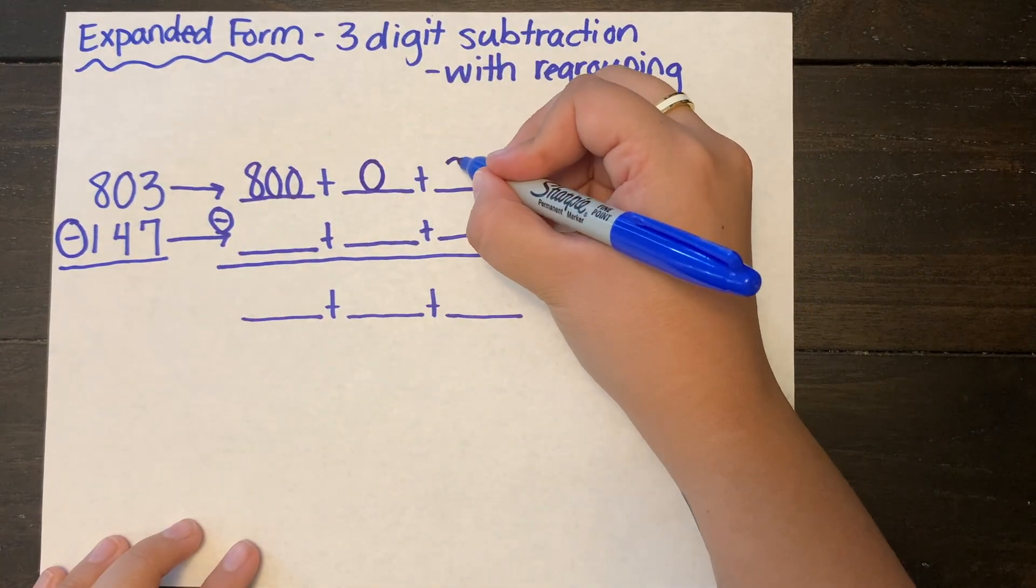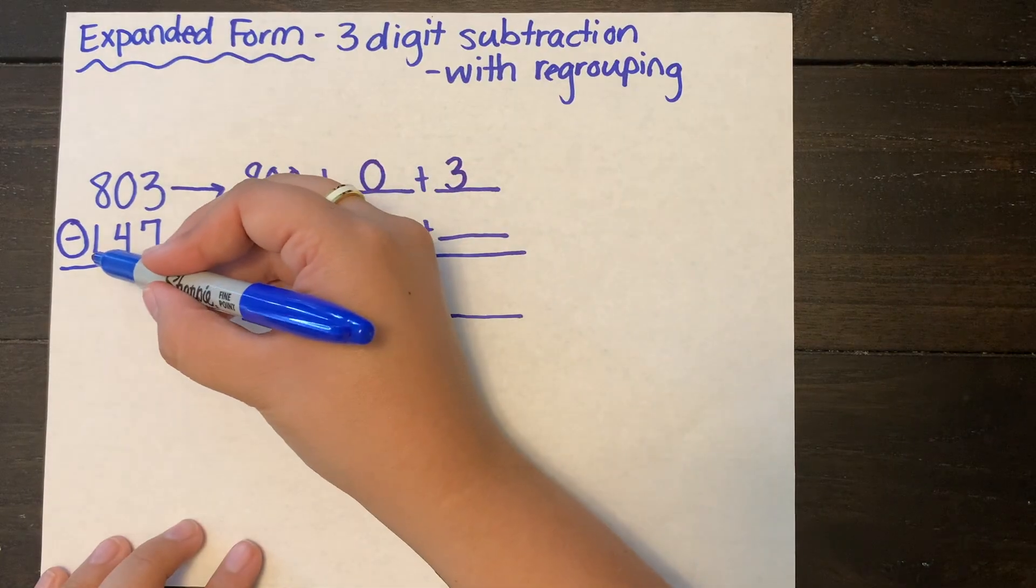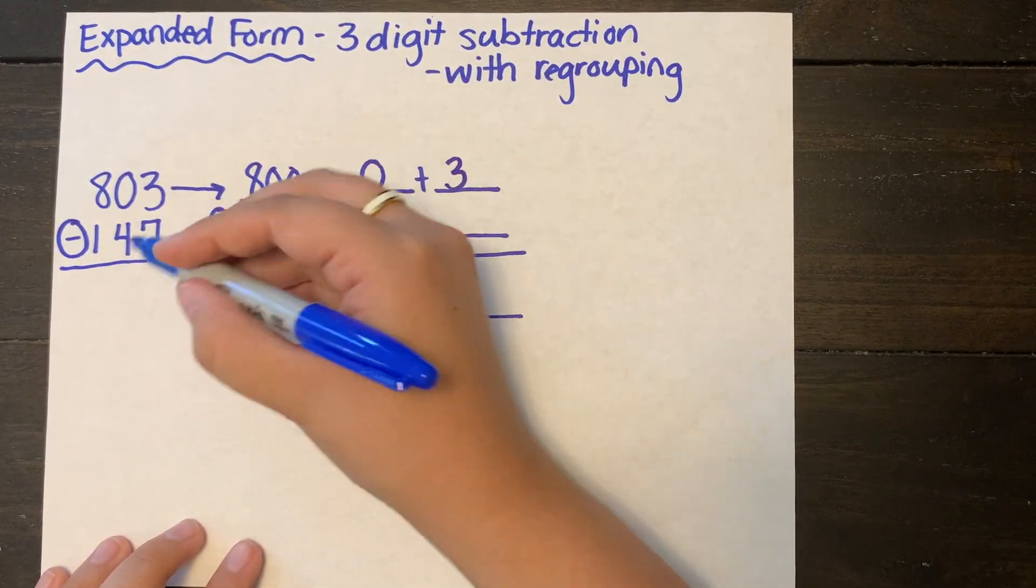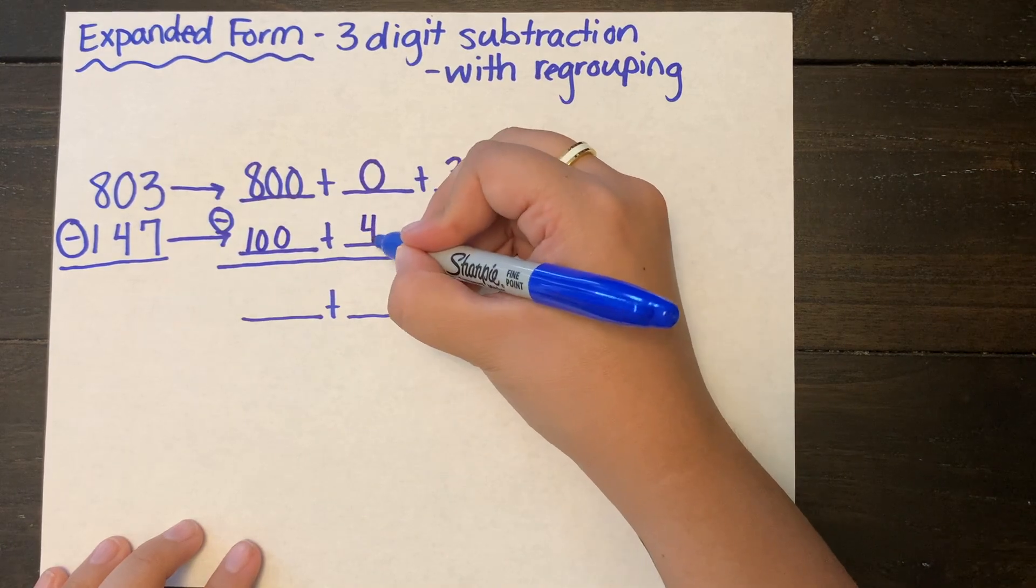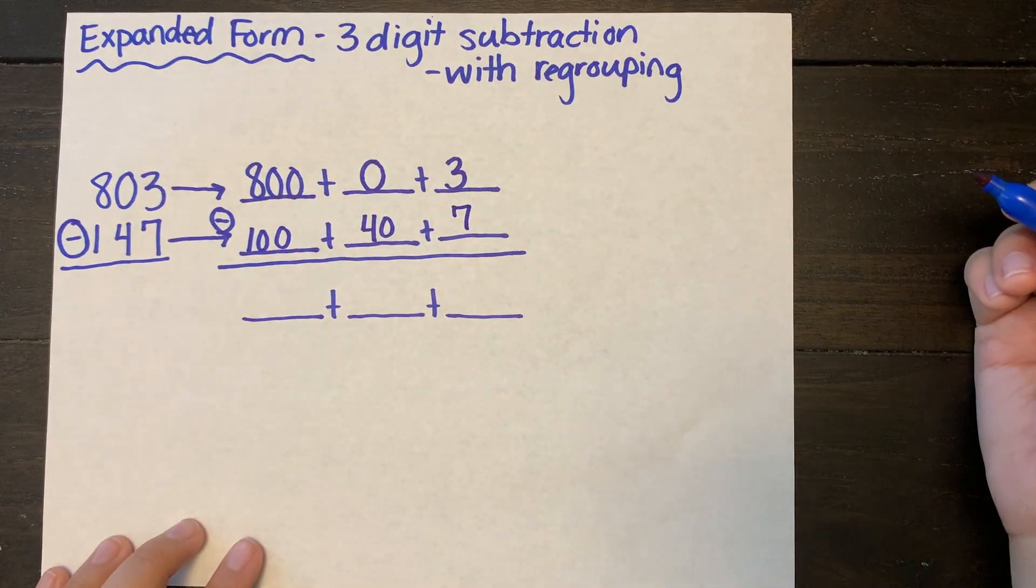So when I'm expanding out 803, keeping my 800 in my hundreds column, a zero in my tens column because I have nothing there, and a three in my ones column. And for 147 I am expanding it out with no issues: 100 plus 40 plus 7.